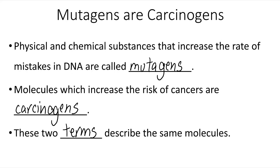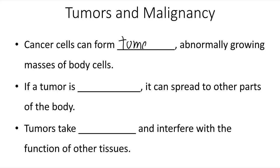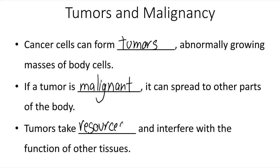Cancer cells can form tumors, which are abnormally growing masses of body cells. If a tumor is malignant, it can spread to other parts of the body. Tumors take resources and interfere with the functioning of other tissues, and this is why cancers can be so deadly.